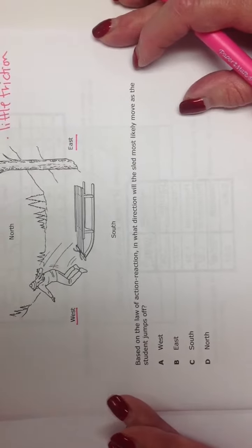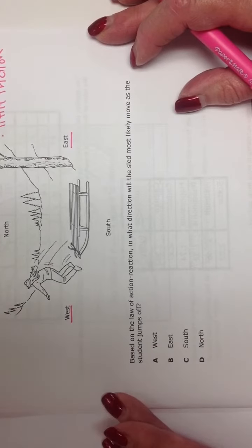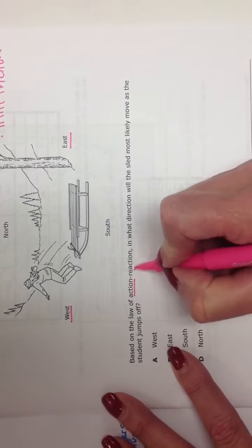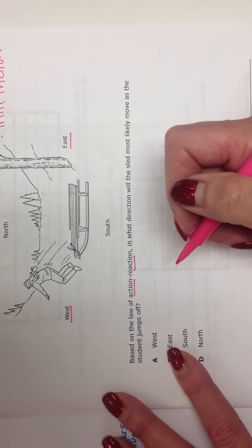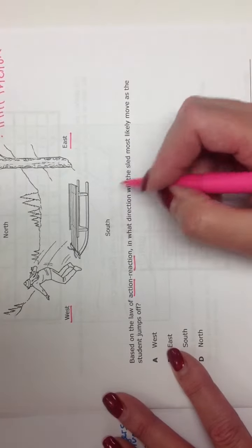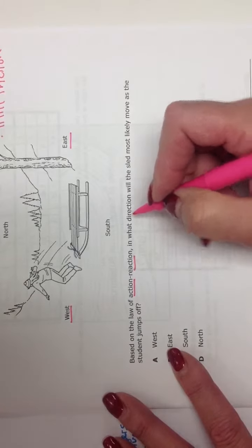And it says now, based on the law of action-reaction, for every action there is an equal and opposite reaction. In what direction will the sleigh move when he jumps off?